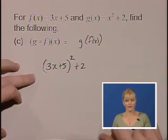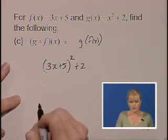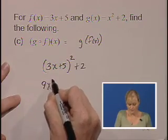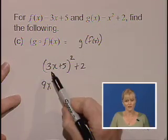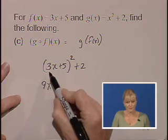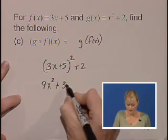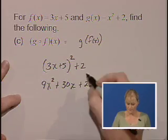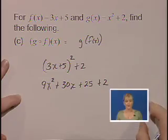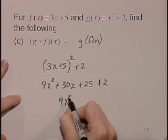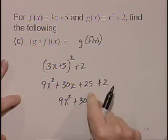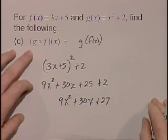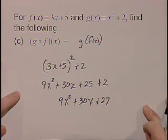So now we need to continue by squaring this binomial. We'll use a shortcut or the mechanical method. We're going to square our first term: 3X quantity squared becomes 9X squared. We'll take 2 times the 3X times the 5, that will give us 2 times 3 is 6 times 5 is 30 — and don't forget your X. We'll square our last term which is 25. Don't forget the 2. Now we'll combine like terms: 9X squared plus 30X, and we can combine 25 plus 2 for 27. So the composition G of F of X is 9X squared plus 30X plus 27.